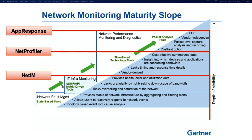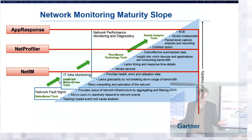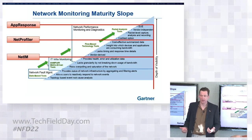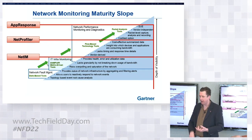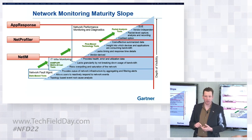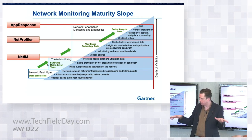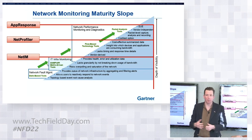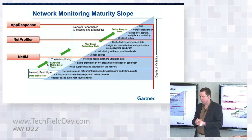An SNMP-based tool can gather data from whatever wants to speak SNMP, whereas when you move to flow, you're already starting to look at routers, switches, firewalls, and devices that can report that stuff. And then when it comes to packets, your coverage can still be pretty broad, but you have to start making a selection on where you're going to grab those things because it can get pretty expensive.